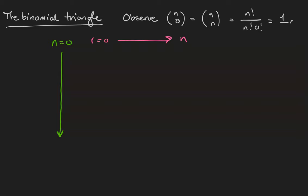So the very tip of the triangle is 0 choose 0, which is 1. The next level is 1 choose 0, which is 1, and 1 choose 1, which is 1. In fact, the edges and tip of the triangle are always going to be ones.